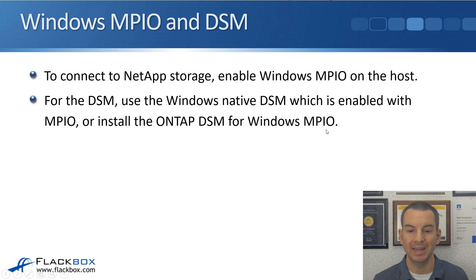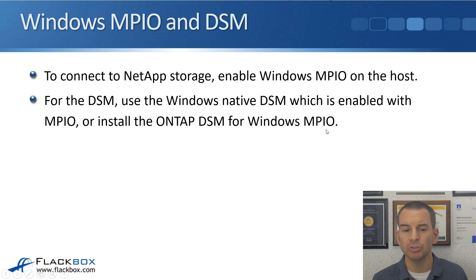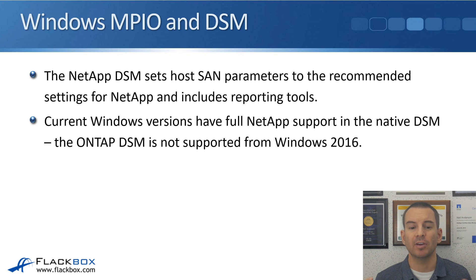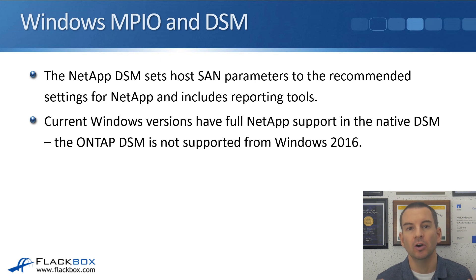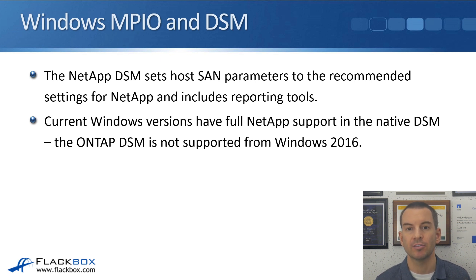To connect to NetApp storage, enable Windows MPIO on the host — this is not enabled by default, it's something you have to turn on in Windows, and you'll see how in the lab demo. For the DSM, you can either use the Windows native DSM, which is enabled when you enable MPIO in Windows, or install the ONTAP DSM for Windows MPIO. The NetApp DSM sets host SAN parameters to recommended NetApp settings and includes reporting tools. However, current Windows versions have full NetApp support in the native DSM, and the ONTAP DSM is not supported from Windows 2016 onwards. If you're using Windows 2016 or newer, you don't need to install the ONTAP DSM. If you're using older than Windows 2016, it is recommended to use the ONTAP DSM.